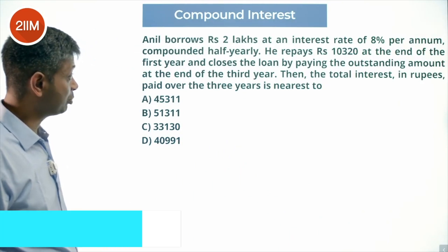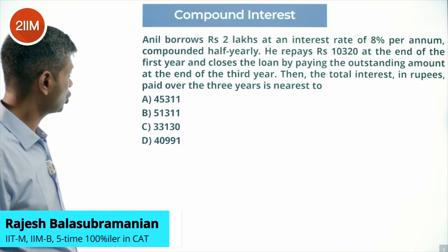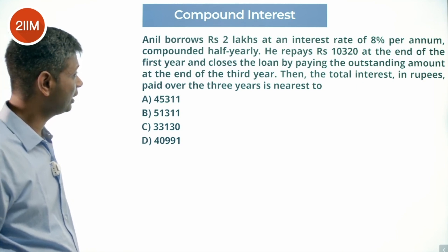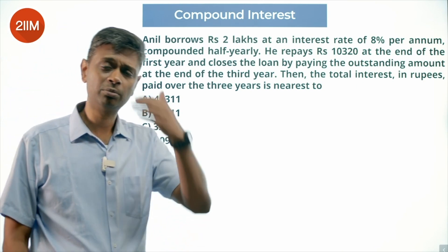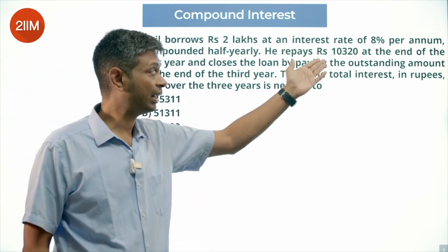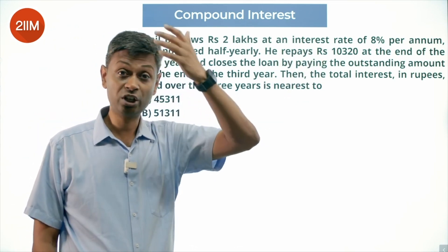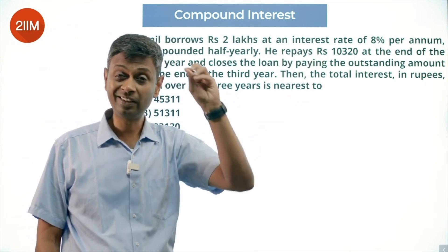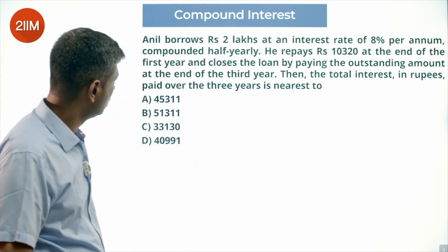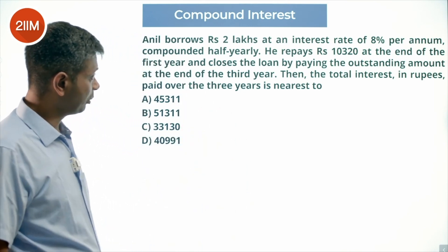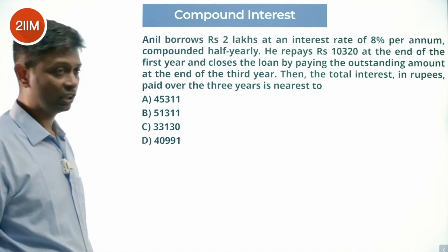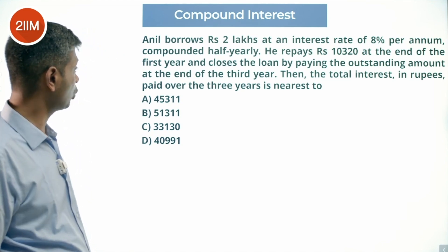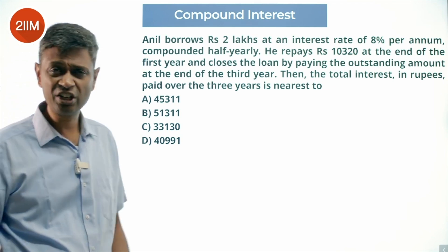Anil borrows 2 lakhs at an interest of 8% per annum, compounded half yearly. He repays 10,320 at the end of the first year. I initially thought it must be 1 lakh something — conditioned to thinking the number should be kind of equal — but it is only 10,320. And then he closes the loan by paying the outstanding amount at the end of the third year. The total interest in rupees paid over the 3 years is nearest to...